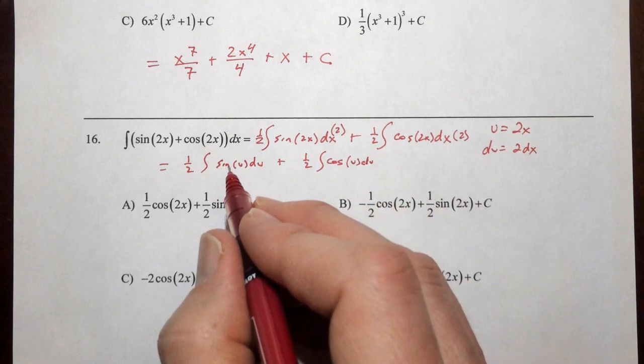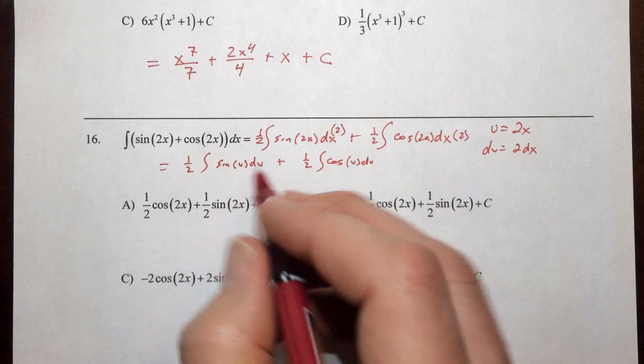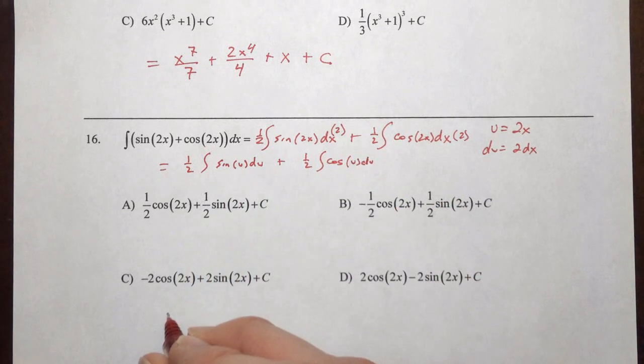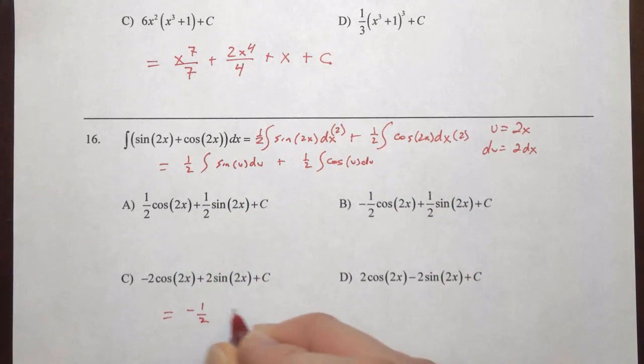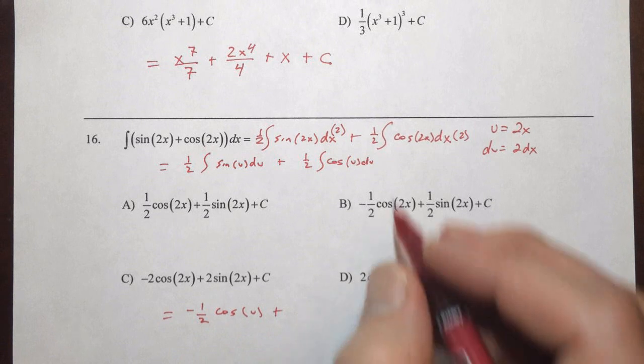Sine has an antiderivative of negative cosine, so I'm going to shoot down here to the bottom, so this is going to become negative 1 half cosine of u, and there is a plus C, but I'm going to hold off because I've still got another antiderivative to do,